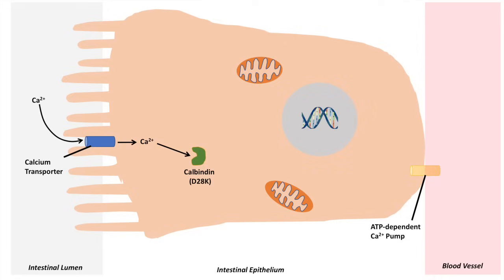It binds to a protein in the cytosol known as calbindin D. This allows the calcium to be transported through the enterocyte to the opposite side, where it can be pumped out into the bloodstream via an ATP-dependent calcium pump.